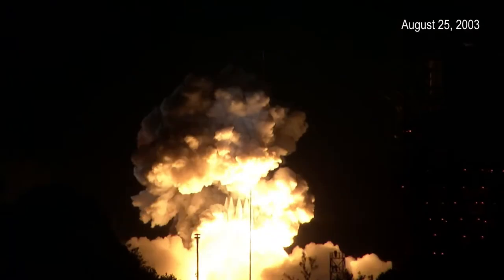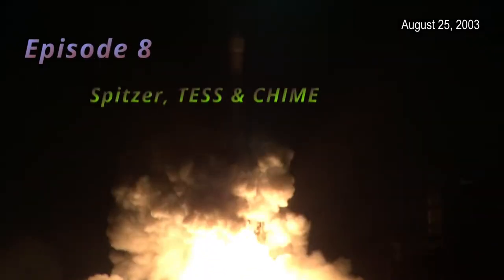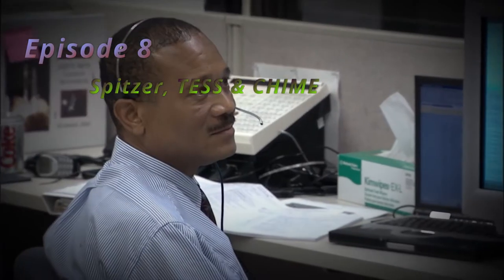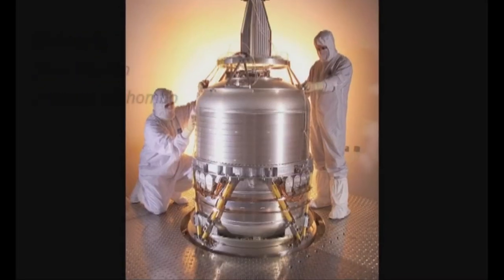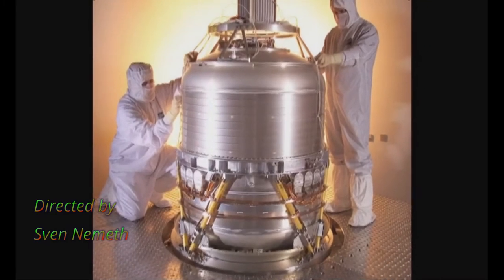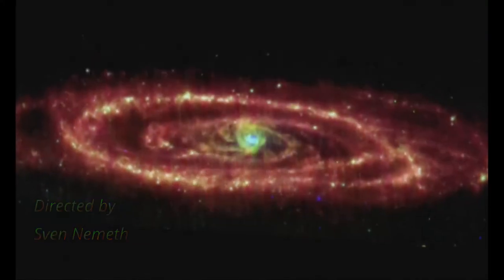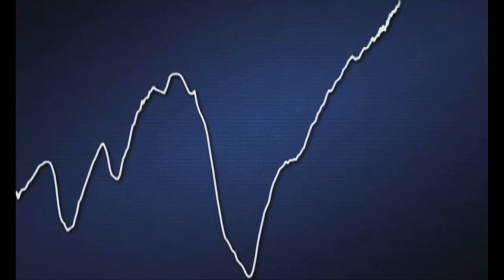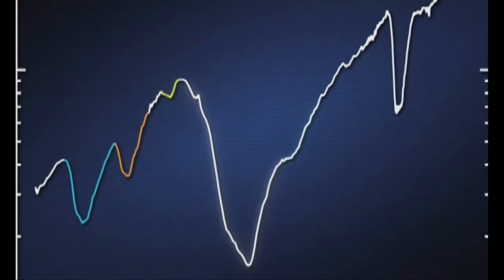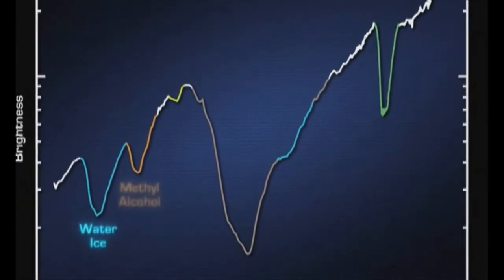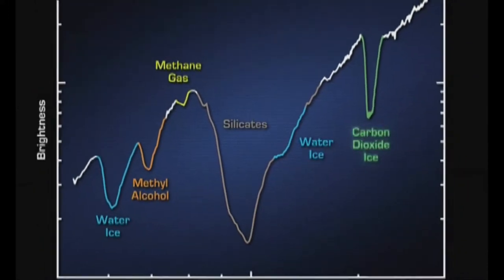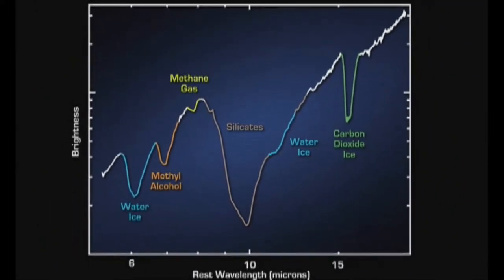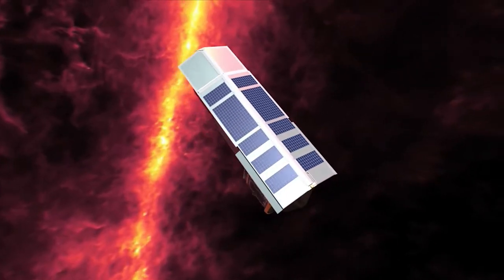The Spitzer Space Telescope has delivered tremendous new information for space science. Only planned to operate for two and a half years, the liquid helium supplied to cool the telescope's instruments held until May 2009. Then the infrared spectrograph and the multiband imaging photometer for Spitzer were no longer able to operate. Only the two shortest wavelength modules of the IRAC camera continued to operate until the necessary cryogen exhausted.